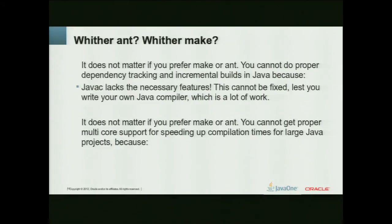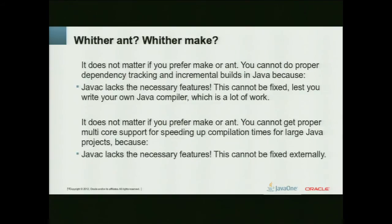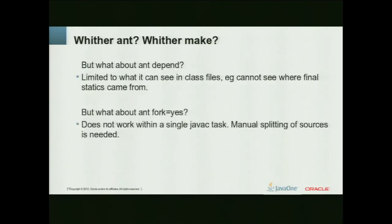About one and a half years ago, when I started looking at the build system for the OpenJDK, I thought: let's fix Ant so we can do this. I looked into Ant and eventually found it's just a wrapper to call JavaC. It only took a week to determine that I have to do something with JavaC. Since I work for Oracle, that's actually a possibility. There were a few attempts at fixing this from Ant — for example AntDepend — but AntDepend can only look at class files because they didn't write their own JavaC compiler. So they can only see dependencies that exist in the class file, where you've lost information like where final static values came from. And there is a fork in Ant, but it can't fork the JavaC task by itself.